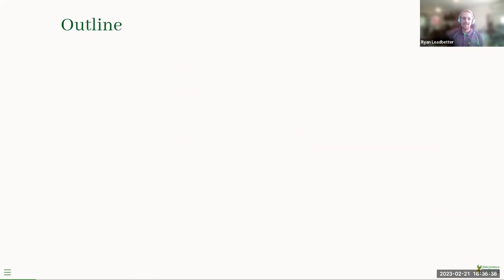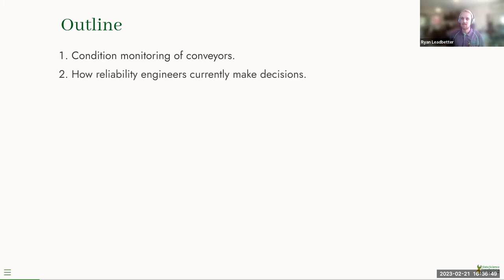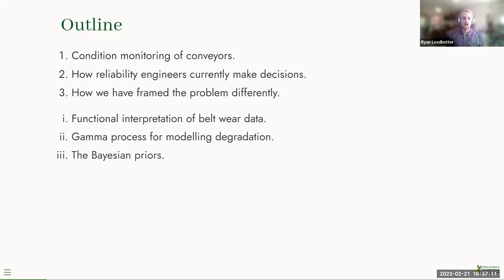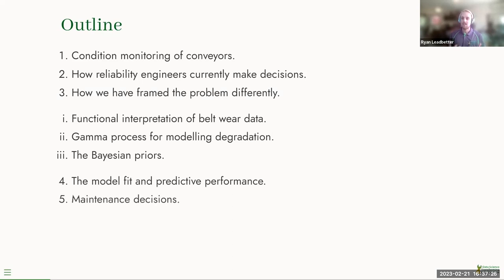Before getting into how they do that, here's a quick outline. First: what does condition monitoring for a belt look like? Then: how do engineers use that data to make decisions currently? And then: how have we framed the problem differently and what's our solution? We're using a Bayesian hierarchical model, interpreting the data functionally, modeling the degradation process using a gamma process, and I'll talk about our priors, model fit, predictions, and how an engineer makes a maintenance decision based on this new forecast.